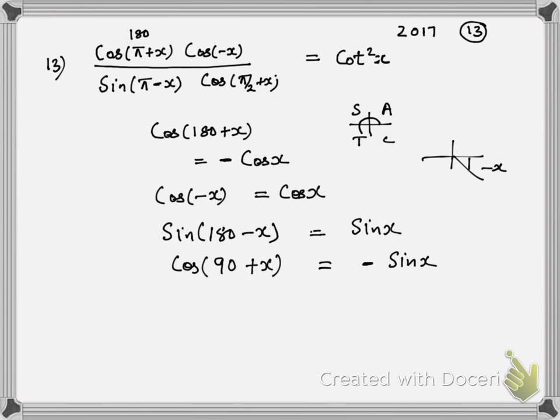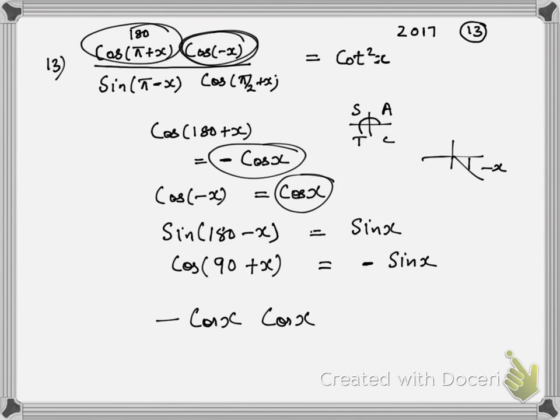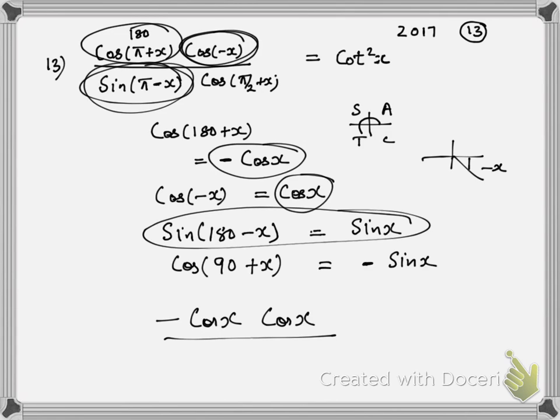Let us see what happens. This becomes, let me circle it, minus cos x. This becomes cos x. This becomes sin x. This becomes minus sin x.